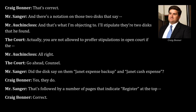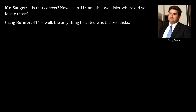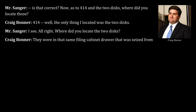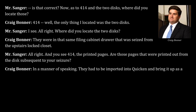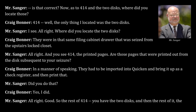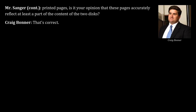That's followed by a number of pages that indicate 'register' at the top, correct? Now as to exhibit 414 and the two disks, where did you locate those? The only thing I located was the two disks. They were in that same filing cabinet drawer that was seized from the upstairs locked closet. The printed pages - are those pages that were printed out from the disk subsequent to your seizure? They had to be imported into Quicken, brought up as a check register, and then printed. Did you do that? Yes I did.